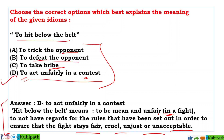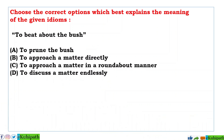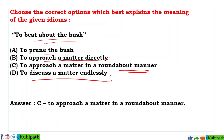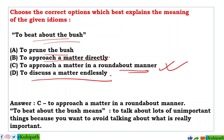Next idiom: 'to beat about the bush'. Options: A: to prune the bush, B: to approach a matter directly, C: to approach a matter in a roundabout way, D: to discuss a matter endlessly. The correct answer is C — to approach a matter in a roundabout way. To beat about the bush means to talk about lots of unimportant things because you want to avoid talking about what is really important.